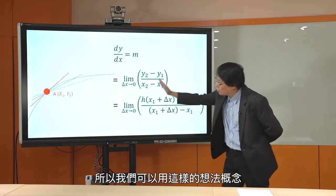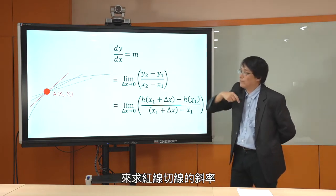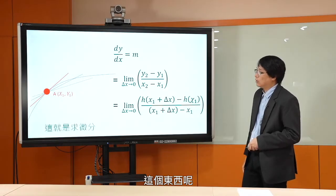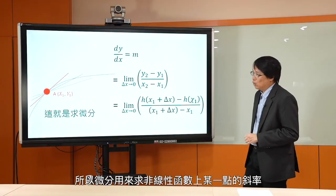所以我们可以用这样子的想法，这样子的概念来求这个红线切线的斜率。这个东西就叫做求微分。所以微分是用来求一个非线性函数某一点上面的斜率。